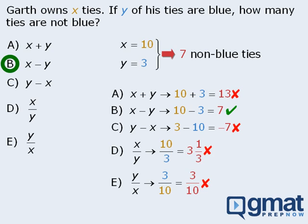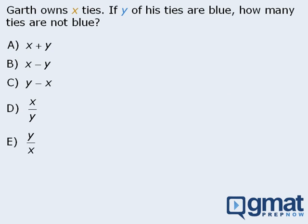Now let's solve this same question using different input values. Let's see what happens if we let x equal 4 and y equal 2. This means that Garth has four ties altogether, and two of them are blue. Using these values for x and y, we see that Garth must own two non-blue ties. At this point, we should recognize that we have a potential problem — we have y equals 2 and our output value is also 2.